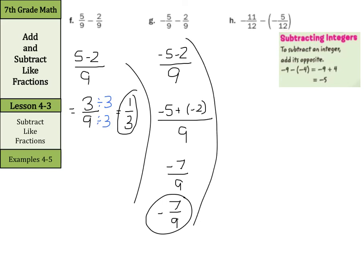Negative 11 twelfths minus negative 5 twelfths. All right, let's rewrite that. We have our common bottom here of 12 already. Then we'll have negative 11 minus negative 5. Again, keep change opposite is so clutch, so crucial here.